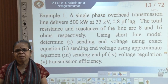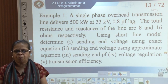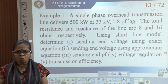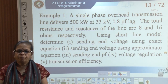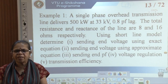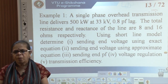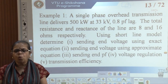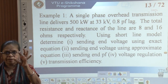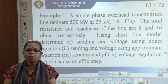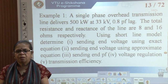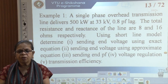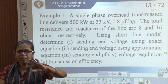Example 2: A single phase overhead transmission line delivers 500 kilowatts at 33 kV, 0.8 power factor lag. The total resistance and reactance of the line are 8 and 16 ohms respectively. Using the short line model, determine: sending end voltage using the exact equation, sending end voltage using the approximate equation, the sending end power factor, the voltage regulation, and the transmission efficiency.